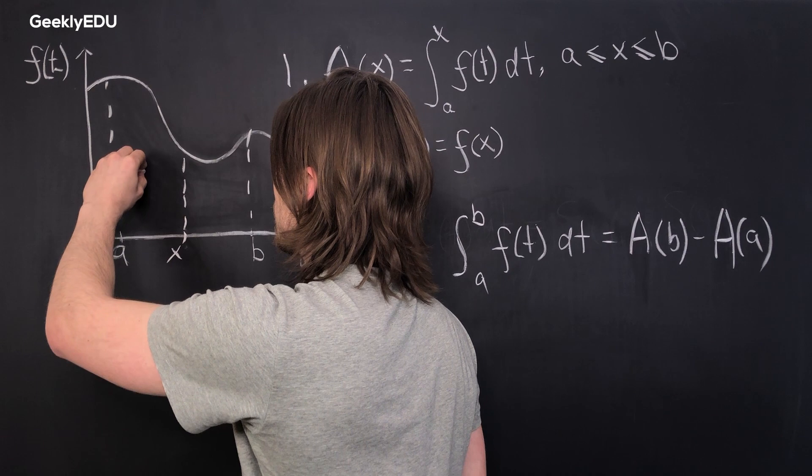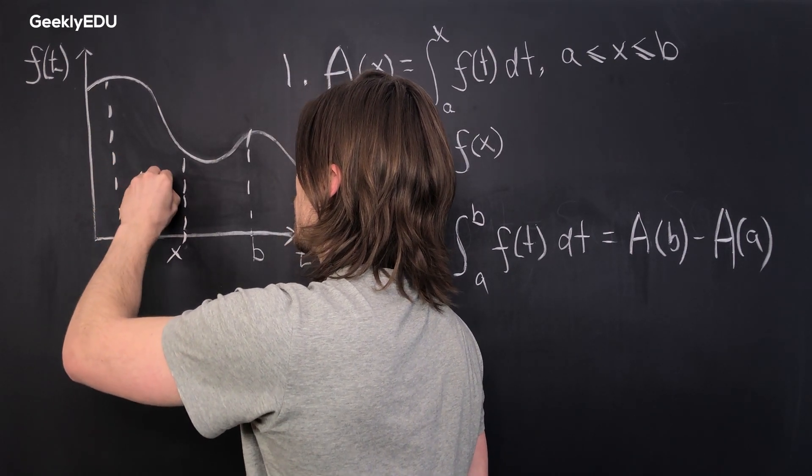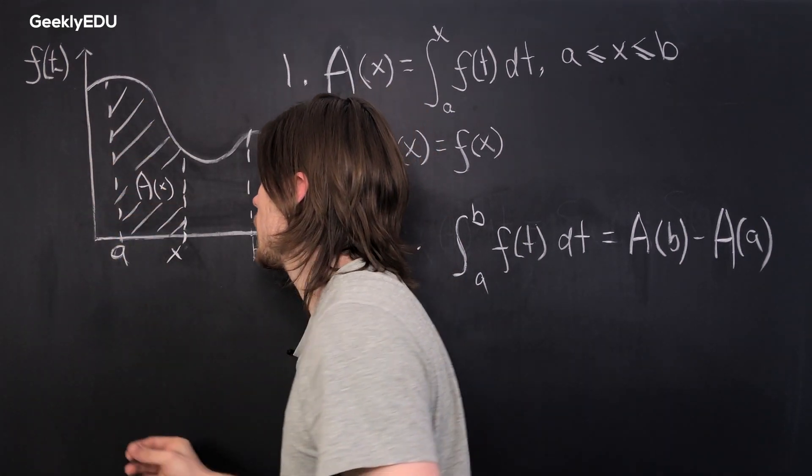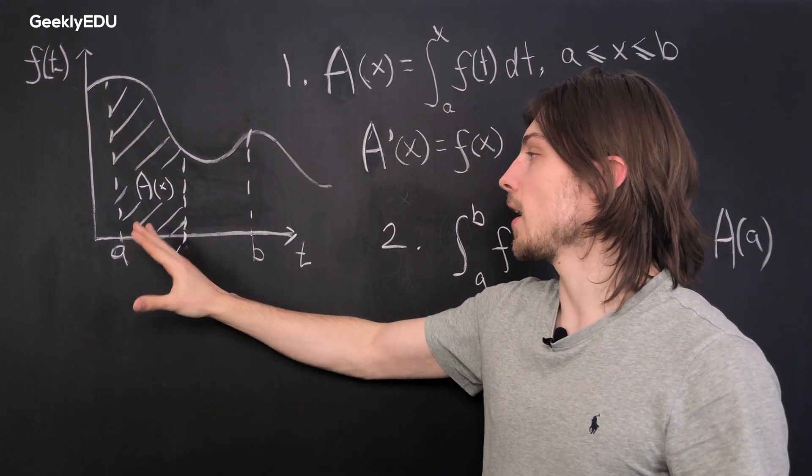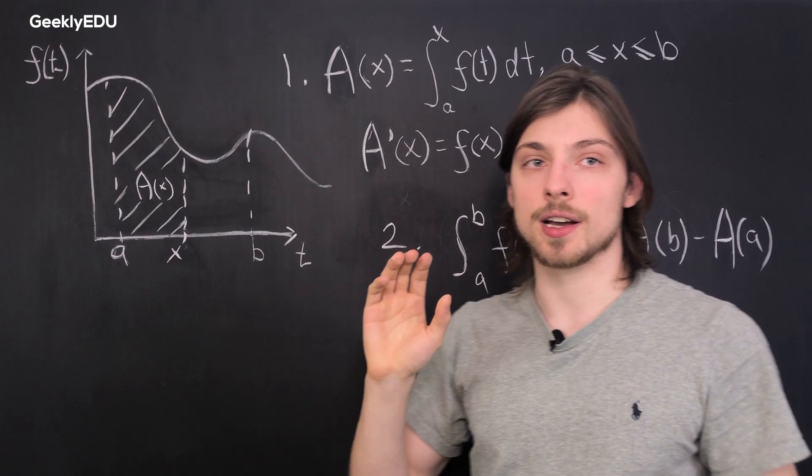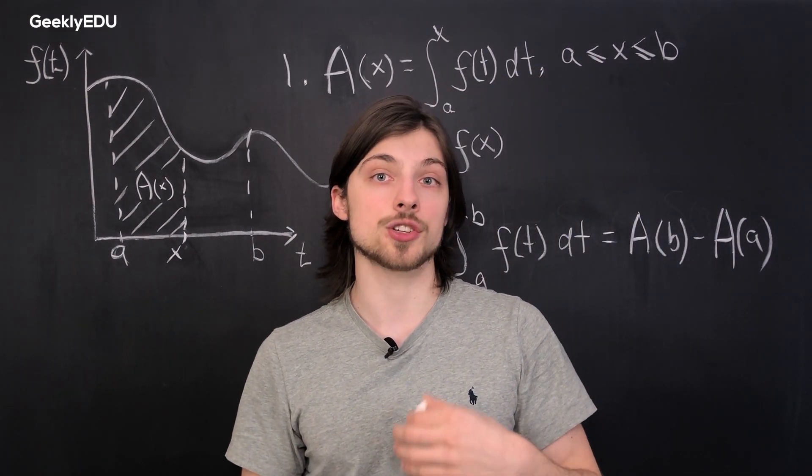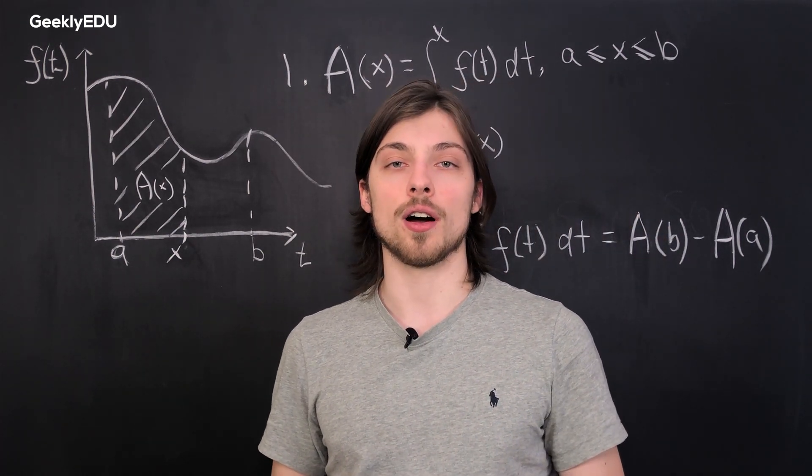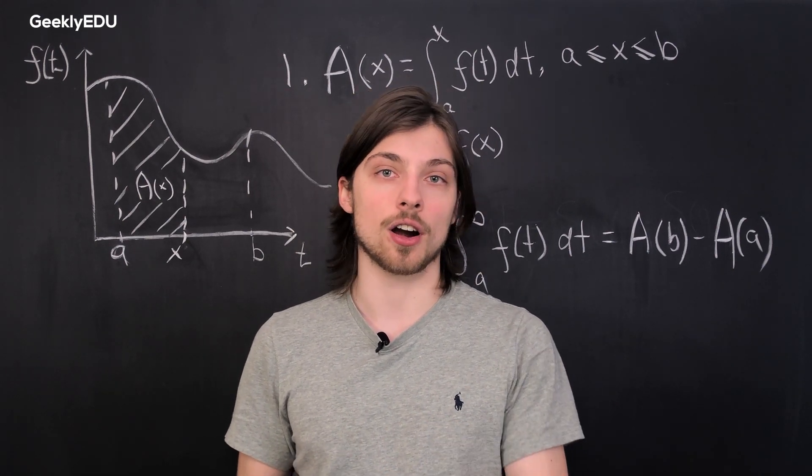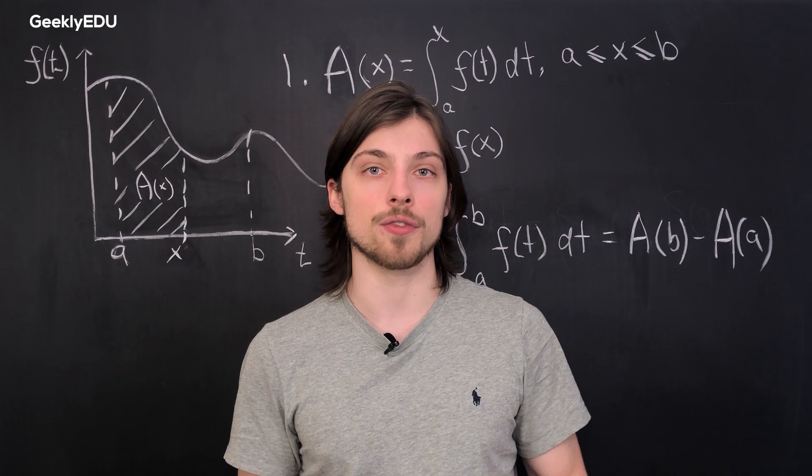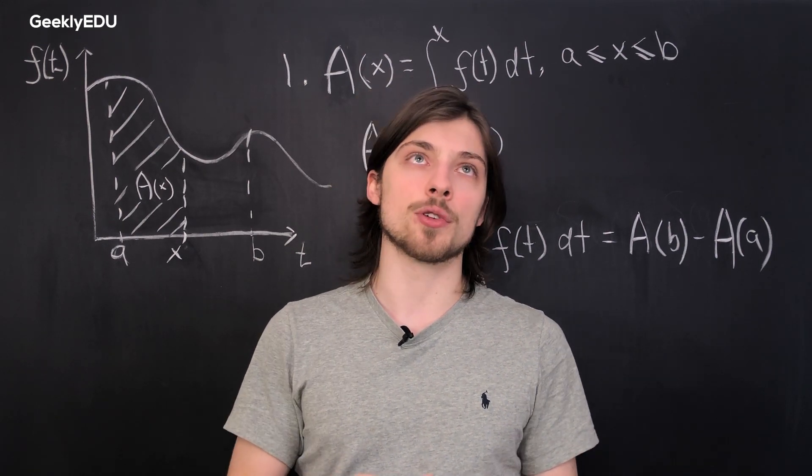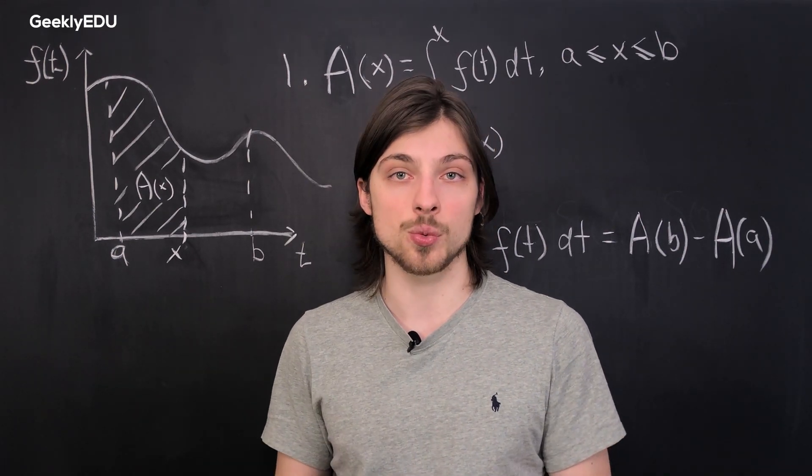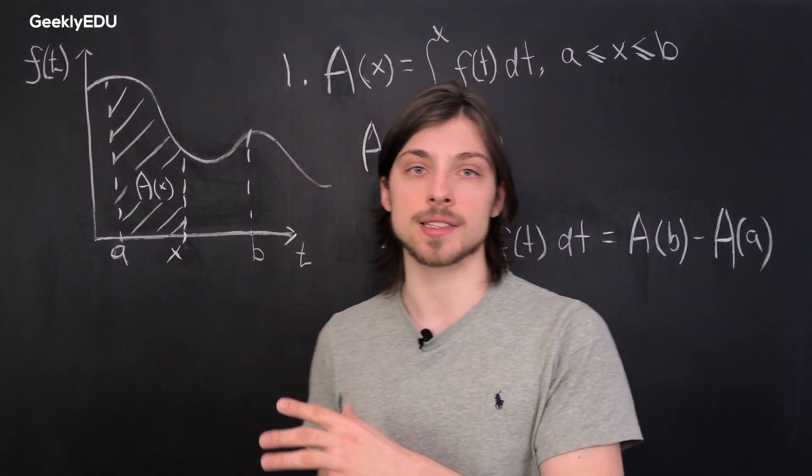Here we can draw our A of x. So this area here is our A of x and right now we'll need that to actually demonstrate the second fundamental theorem of calculus, which deals with calculations for definite integrals. If you've seen our video on the basics of integration we've already done a calculation like that, but we didn't really go into details of where that comes from and why it's done exactly this way. The answer is it comes from the second fundamental theorem of calculus.